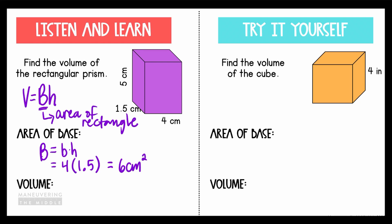Now, it's really easy to stop there because we've done some calculations. But remember, that only represents the area of the base. Now we're going to want to go back to our original formula to find the volume. Volume equals area of the base times the height. I can plug my 6 centimeters squared in for the area of the base, and then multiply times the height — 5 centimeters — and find that the volume of the rectangular prism is 30 centimeters cubed.